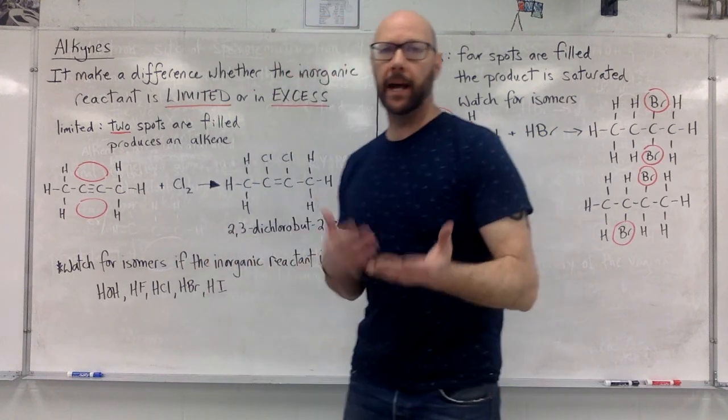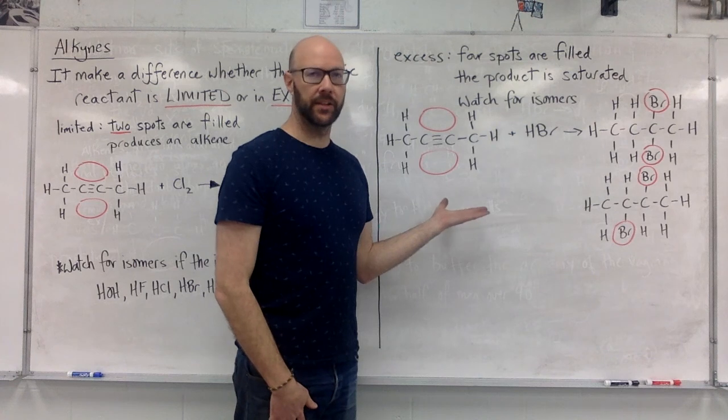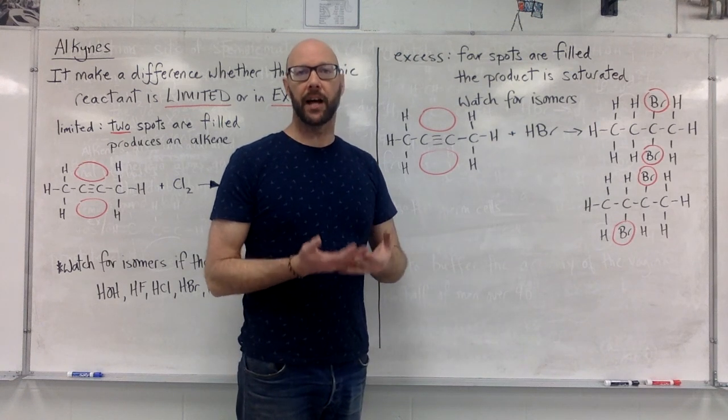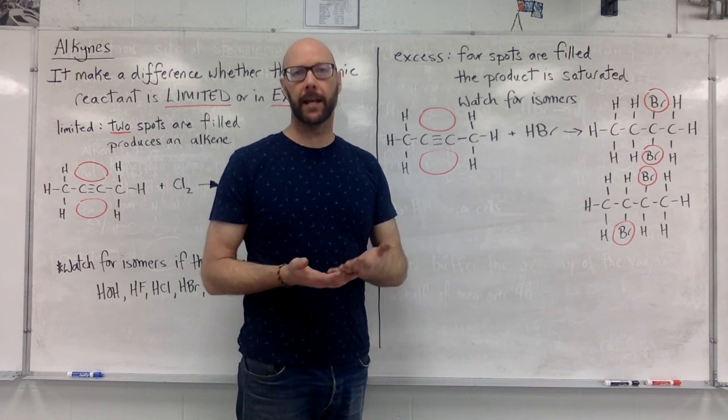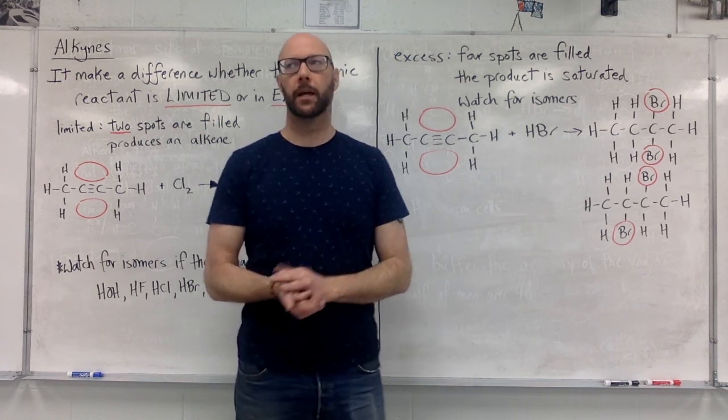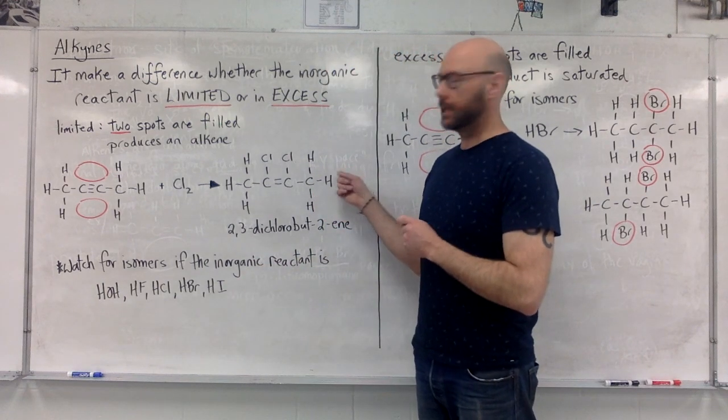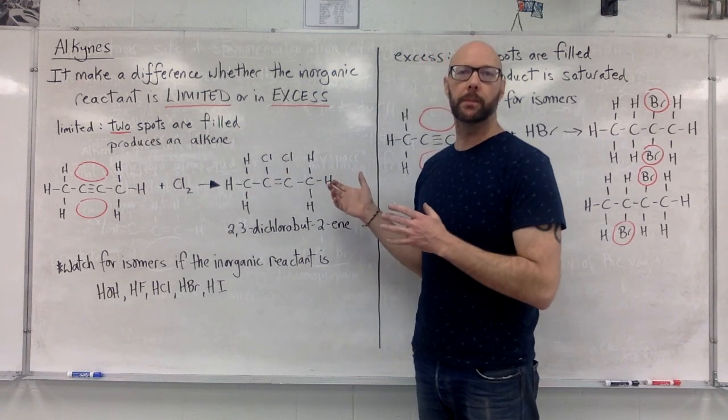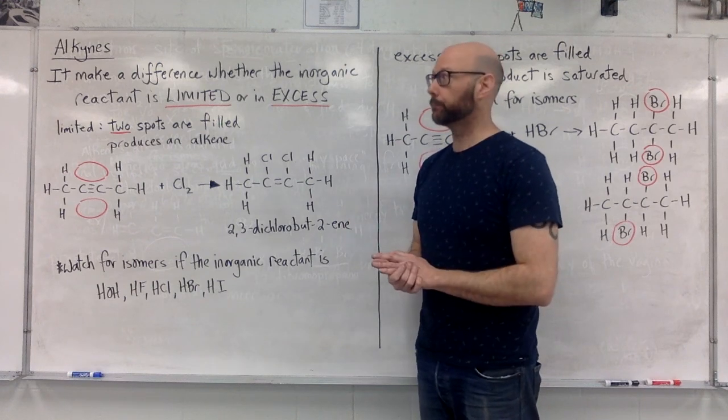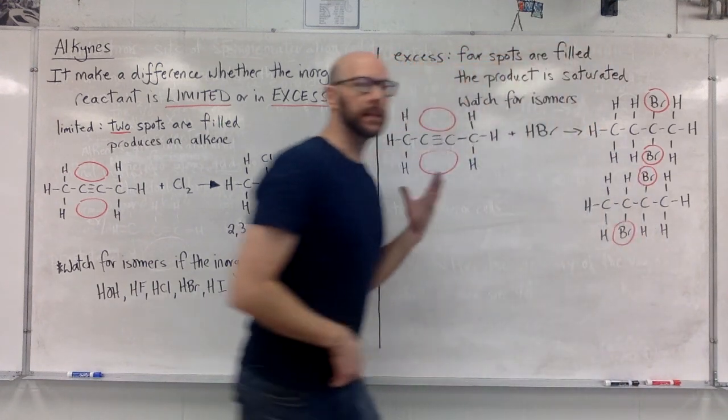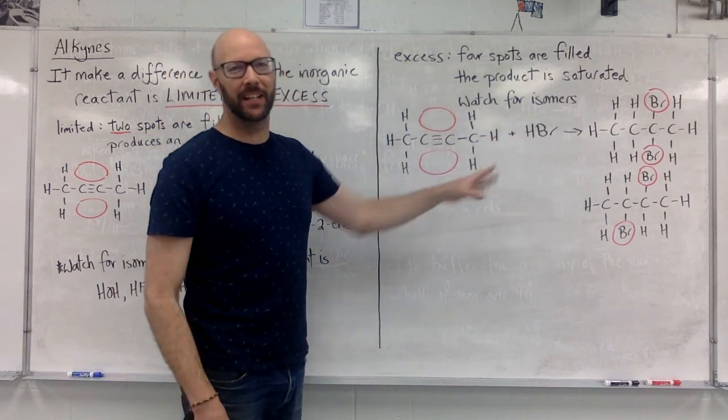The addition of an alkyne has these two big cases, a limited situation and the excess situation. Both of them start with an unsaturated alkyne and they're reacting with some kind of inorganic compound that has two atoms in it. If we're told that the reactant is in limited quantities, we're going to end up going from a triple bond to a double bond and producing some kind of unsaturated alkene or technically maybe even an alcohol. Over here, in the excess situation, we're going all the way from an alkyne to some type of saturated hydrocarbon. And I hope that helps.